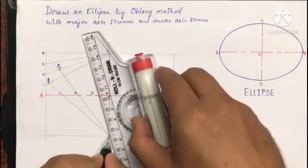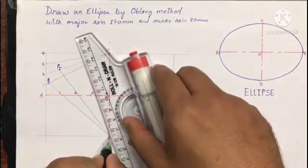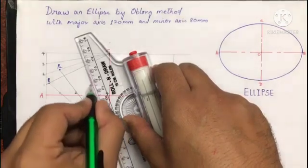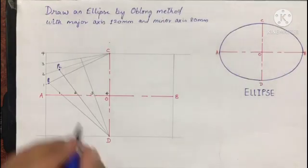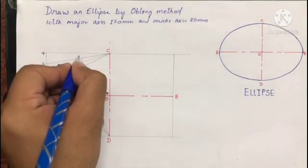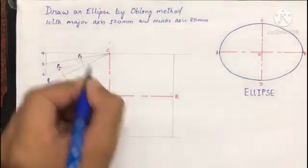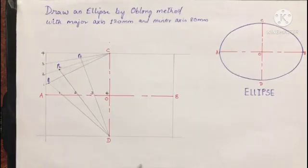Connect D with point number three and extend it till it reaches line number three, which will give us point P3.